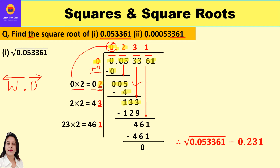Bring down the next period 33, so the dividend becomes 133. For the new divisor, take the current quotient 02, which is 2, double it to get 4, and leave a blank. We need a digit in the blank — the same digit goes in the quotient — such that the product is equal to or less than 133. Trying 3: 43 × 3 = 129, which is very close to 133. So we place 3; the product is 129 and the difference is 4.